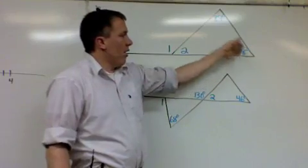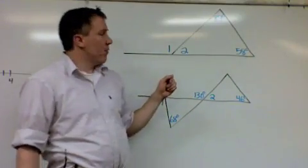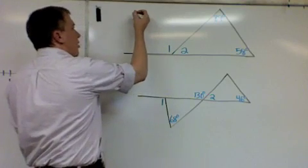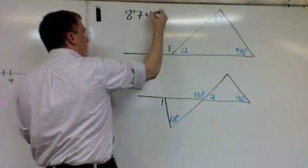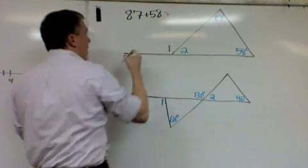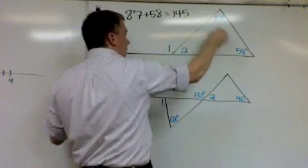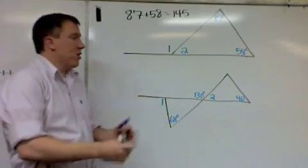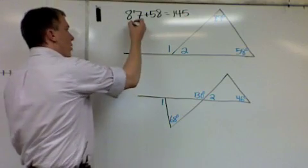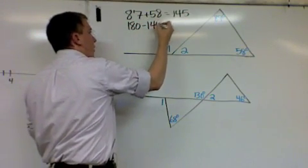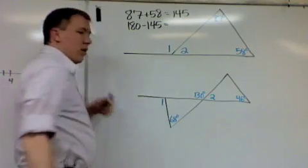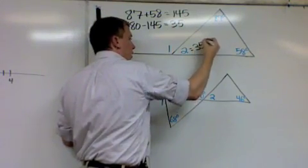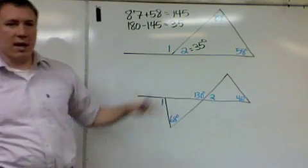So let me take 87 plus 58, the other two angles I do know. 87 plus 58 is 145. That's what these two angles add up to. And so now all I need to do is subtract that from 180. 180 minus 145, which gives me 35. And so angle 2 has to be equal to 35 degrees, because now the angles in the triangle all add up to 180.